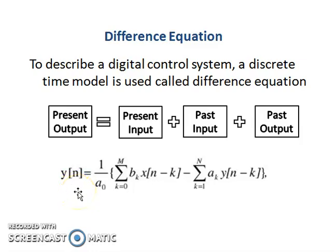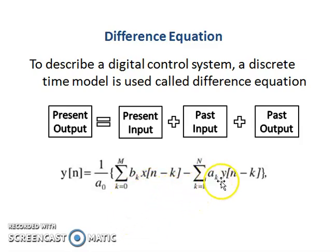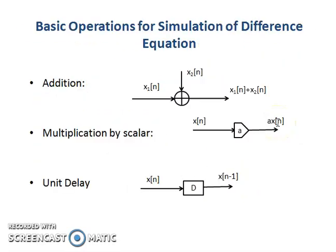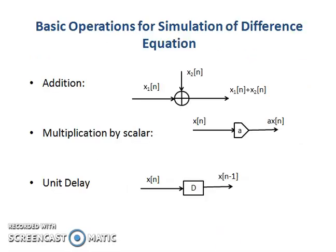This equation is given here. y(n) indicates the present output or present response. It is equal to two terms: the first term is the sum of the present input and past input, and the second term is the sum of the past output.